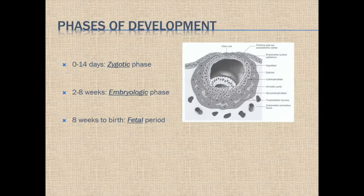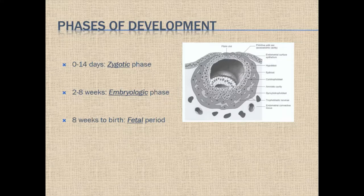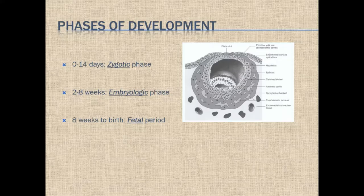After the fusion between the sperm and the egg — day 0 — from day 0 to 14 we call this the zygotic phase, which is merely a rapid increase in number of cells. Then gradually they start to specialize, and that's between week 2 to 8, which is the embryologic phase. Week 8 all the way to birth is the fetal period.